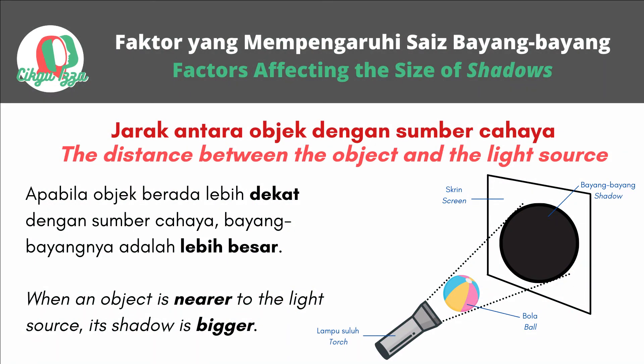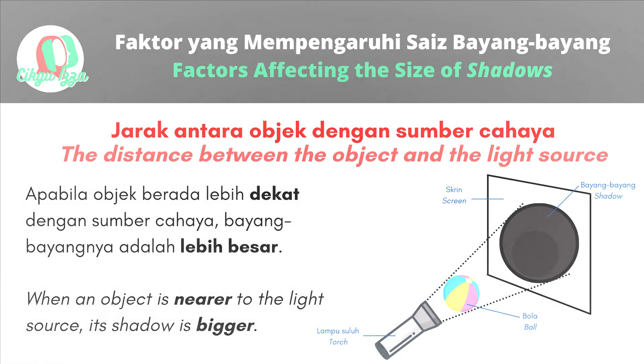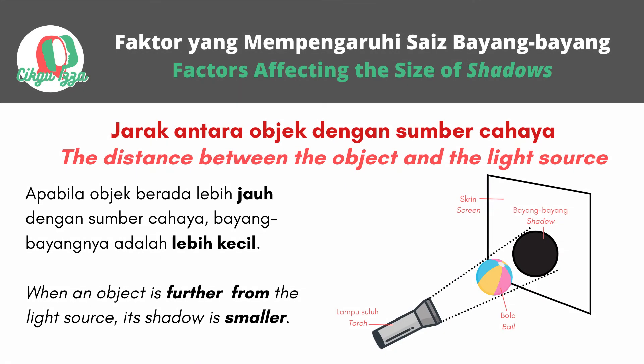The first factor is the distance between the object and the light source. When an object is nearer to the light source, its shadow is bigger. And when an object is further from the light source, its shadow is smaller.